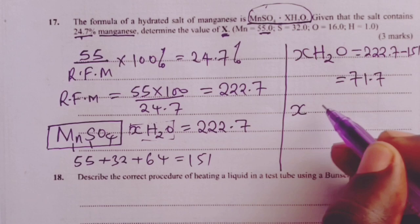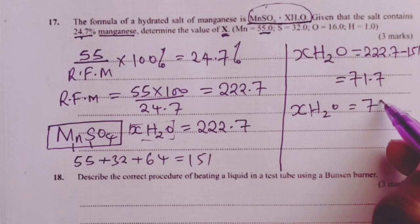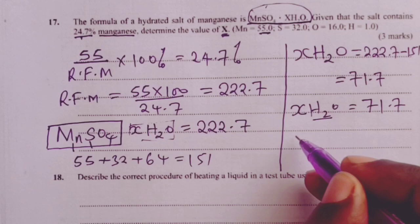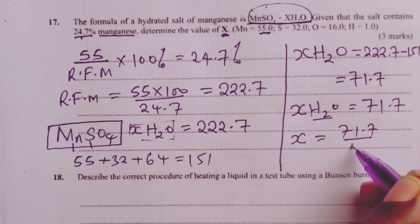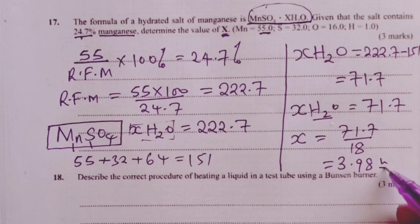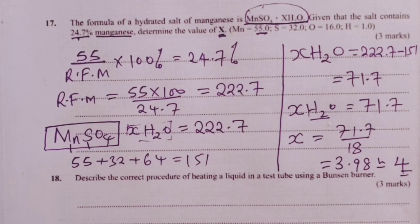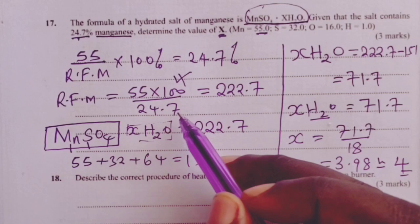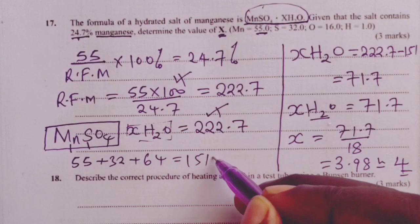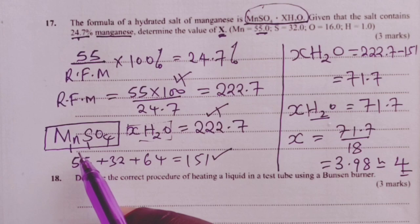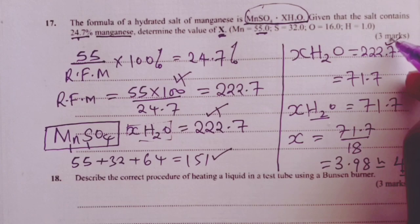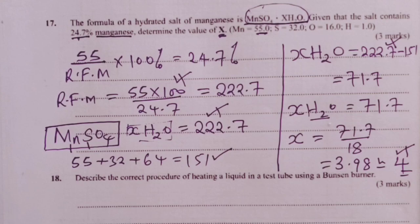Then we can get the relative formula mass of our anhydrous manganese sulfate. We know manganese is 55, sulfur is 32, and four oxygen atoms would be 64. That gives us a total of 151. So what it means is that only my water of crystallization would have a mass of 222.7 minus 151 and that should give me 71.7. From here I'm able to get my X water being equal to 71.7 and we know water is 18 so then I can get my X as 71.7 divided by 18 and that gives 3.98 which is approximately 4 for 3 marks.